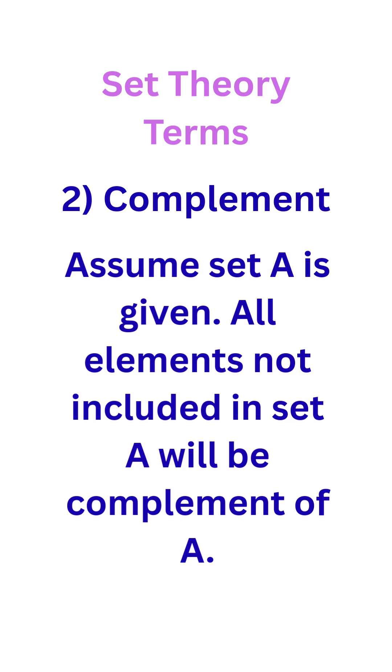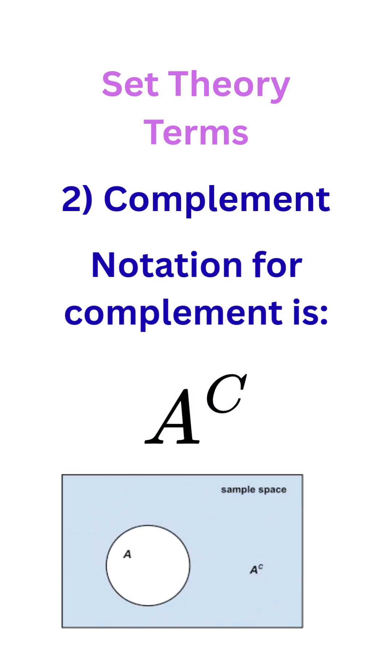Complement. Assume set A is given, all elements not included in set A will be the complement of A. This is the notation for a complement, and as the Venn diagram shows, the complement of A is just everything outside of set A.